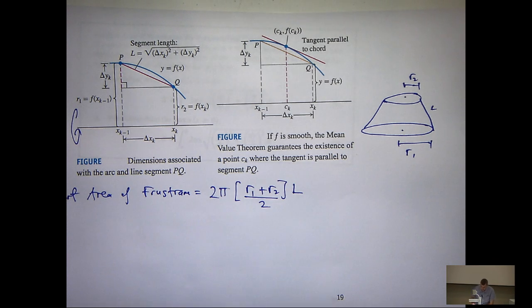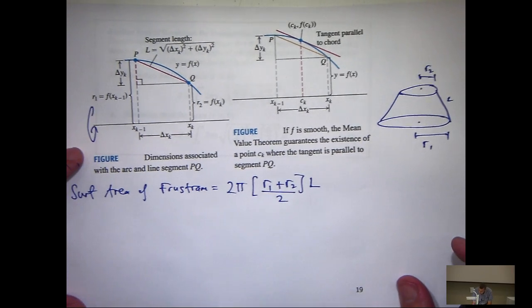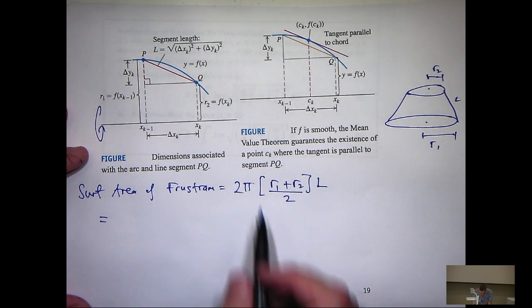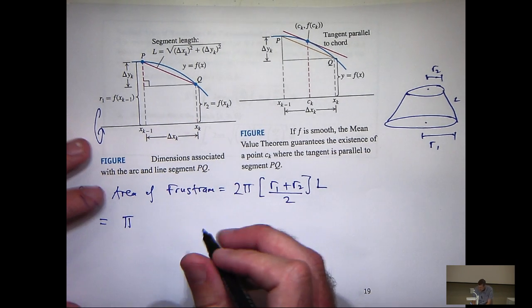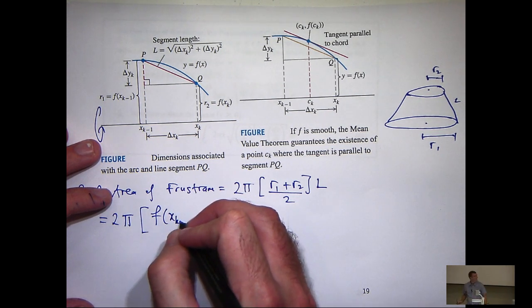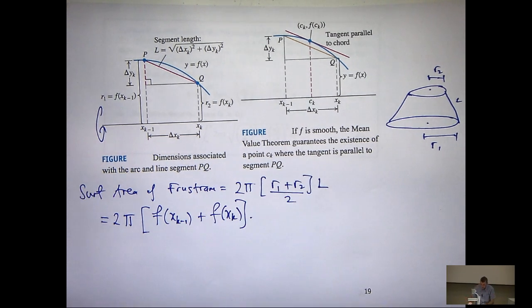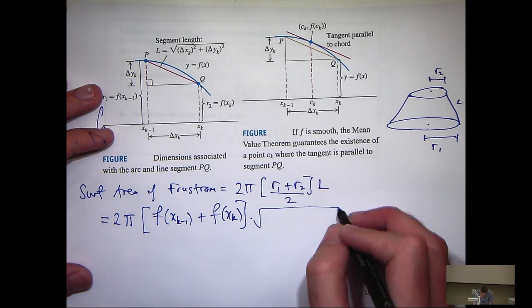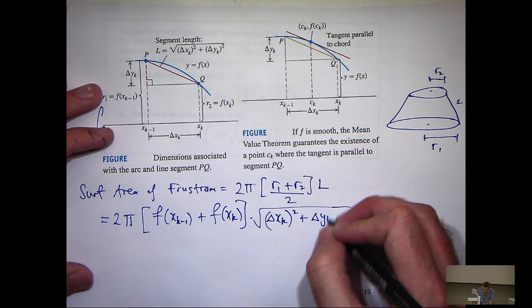Now, how does this work with this diagram up here? Well, it's just the following. What's R1 and R2? It's just this. And what's big L? Well, we know big L by the Pythagoras' theorem. It's just that.